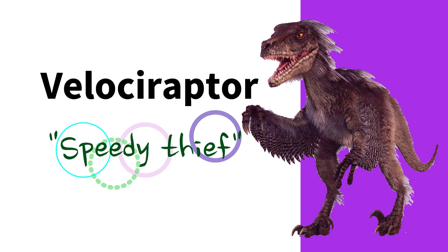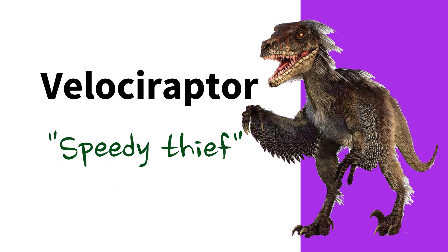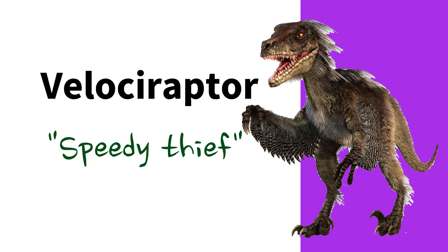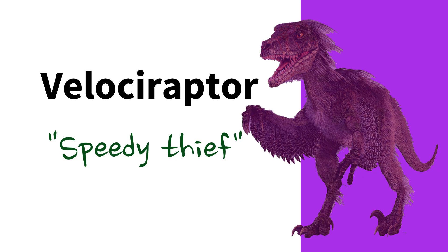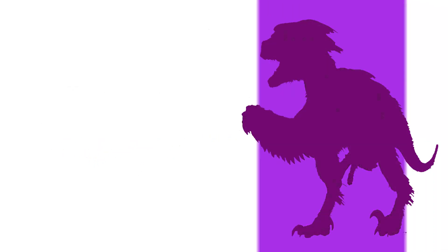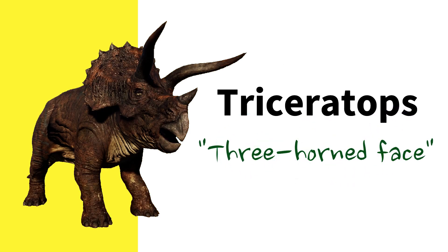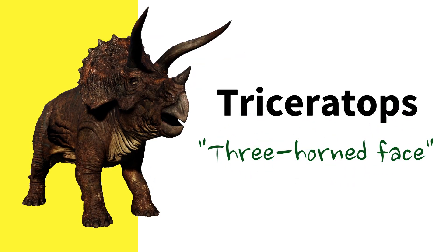Velociraptor — 'speedy thief.' The name refers to the dinosaur's speed and the sickle-shaped claw on its foot, which was likely used for hunting and defense. Triceratops — 'three-horned face.' This name refers to the three horns on the dinosaur's face, which were likely used for defense and mating displays.